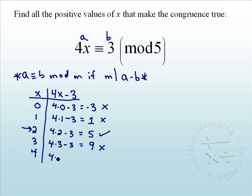And lastly, 4 times 4 minus 3 is 13. 5 does not go into 13. So to finish this off, notice we have x being 2 as an answer.